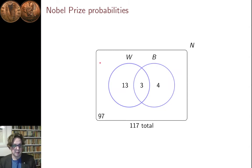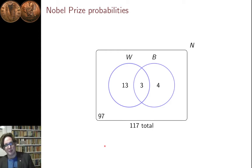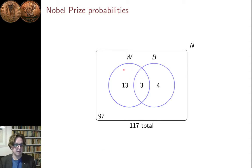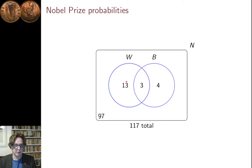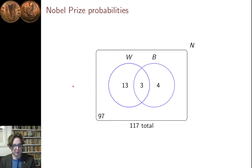So this describes our situation. This square here is supposed to be the whole set — the set of Nobel Prize winners for Literature — and there are 117 of those in total, and we have two subsets. In probability terms, there are two events: one subset is the female winners of the Nobel Prize, and another subset is the Booker Prize winners who also won the Nobel Prize for Literature. There are 16 women and seven Booker Prize winners, but there's an intersection. The union of those two sets is 20, and so there are 97 Nobel Prize winners who don't belong to either the woman subset or the Booker Prize subset.